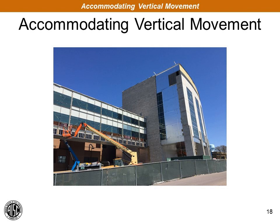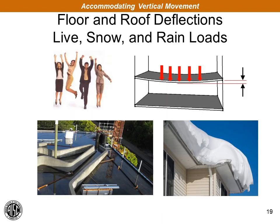Before we dig into lateral movements, let's refresh and talk about accommodating vertical movement in the facade joints — we've touched on this in the previous two sessions. All structures are going to be affected by dead and live loads on the building, and those cause the floor framing to deflect. The real concern is that vertical structural movements need to be kept sufficiently small so they don't cause horizontal joints in the facade to close and potentially damage sealants or the facade components themselves.